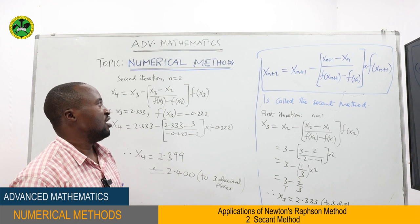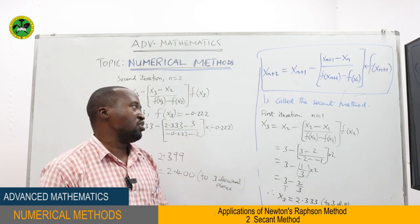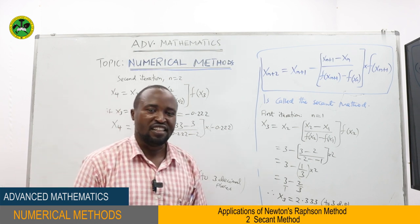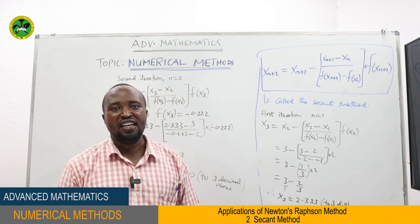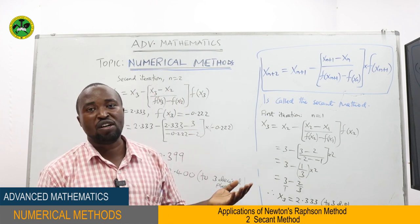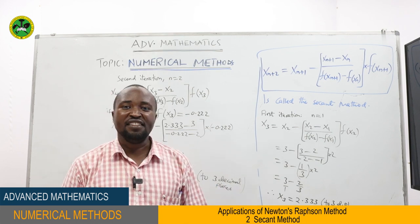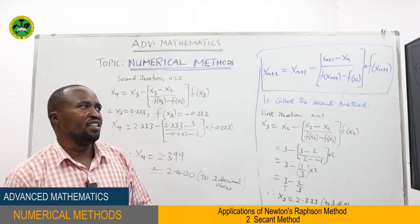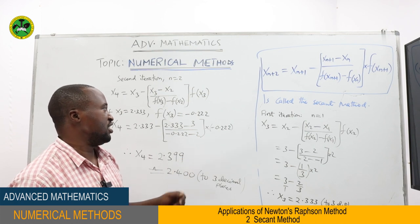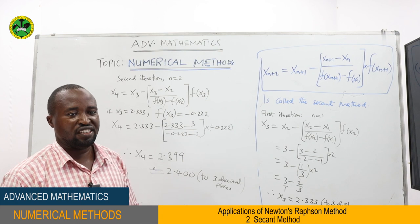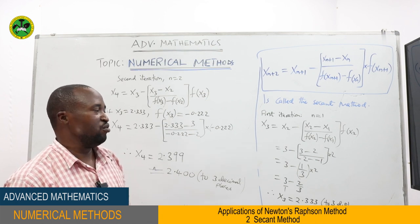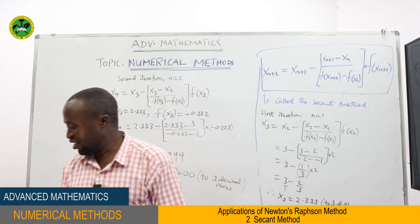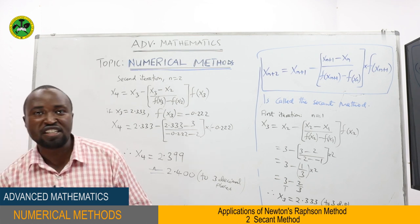We have seen the application of Newton-Raphson method for finding the square root of a positive real number and the reciprocal of a positive real number. The last part was the derivation of the secant method and how to apply it. Now it is time for you to practice numerical methods with the following assignment questions.